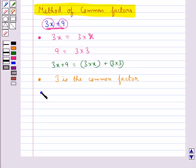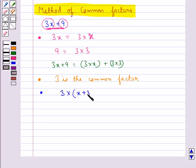Then in the next step we combine the remaining factors in each term in accordance with the distributive law. By the distributive law we get that 3 into x plus 3 into 3 is equal to 3 into x plus 3.